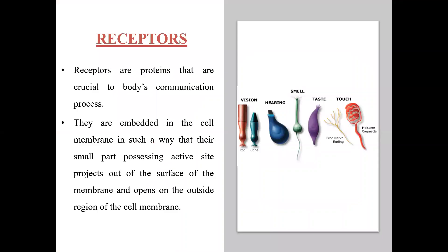Receptors are also a form of protein which are used for the body's communication process. The body's communication happens through receptors. Receptors are embedded in the cell membrane — the entire body is covered in skin and cells. So in all cell membranes there are receptors, and they carry out communication from one place to another through neurons.